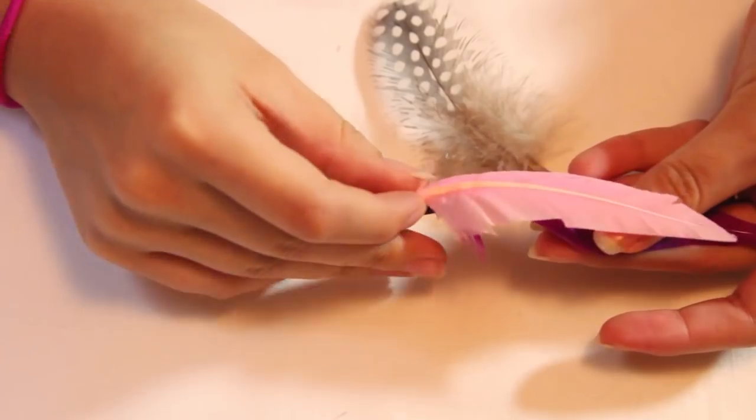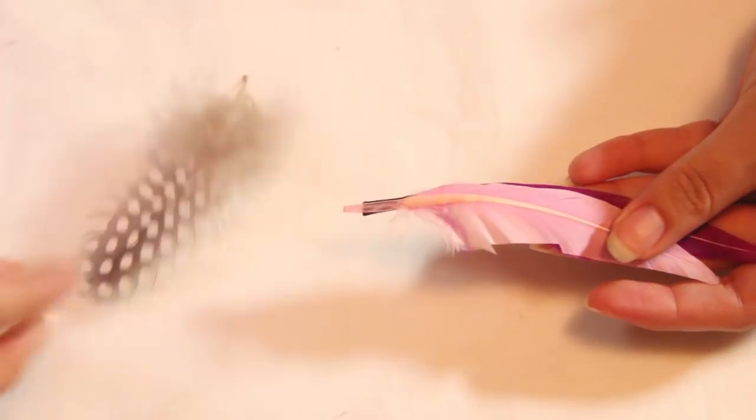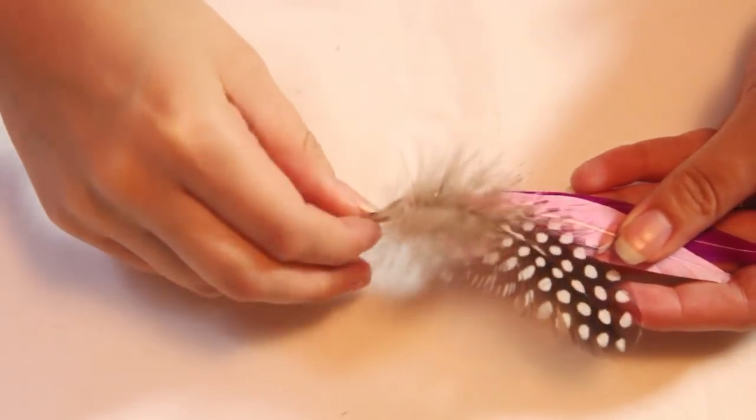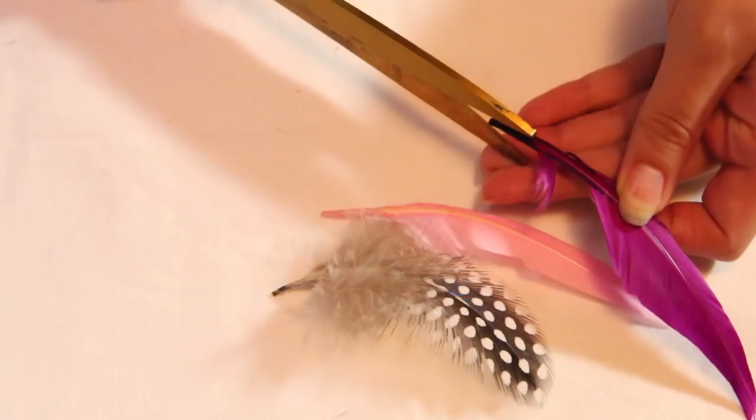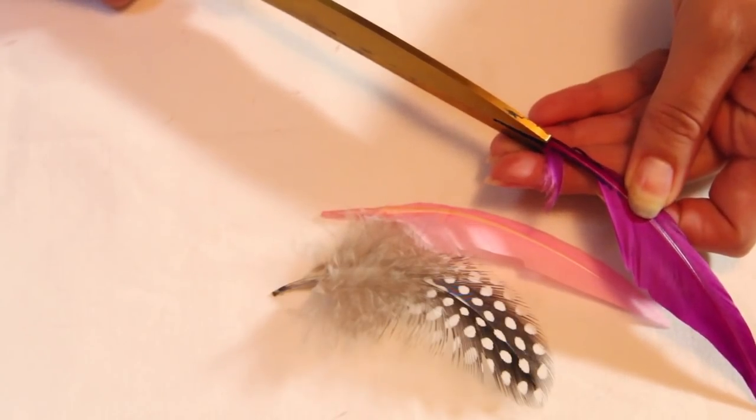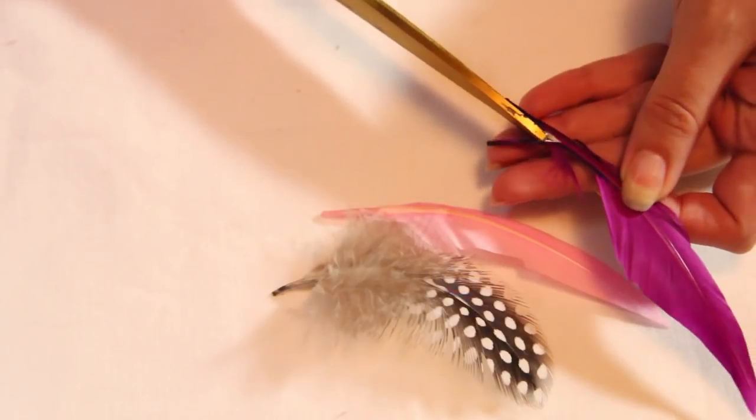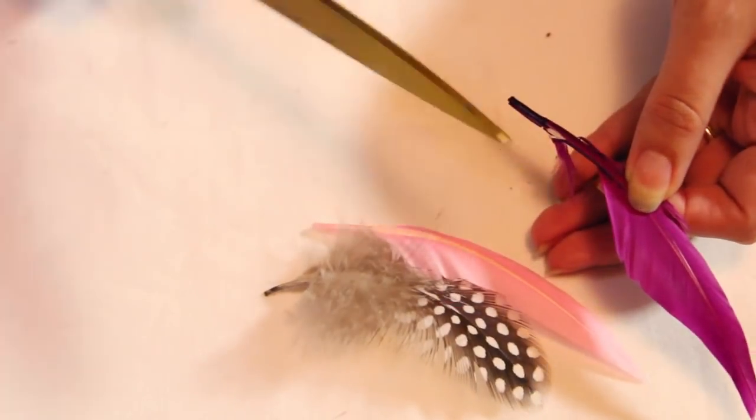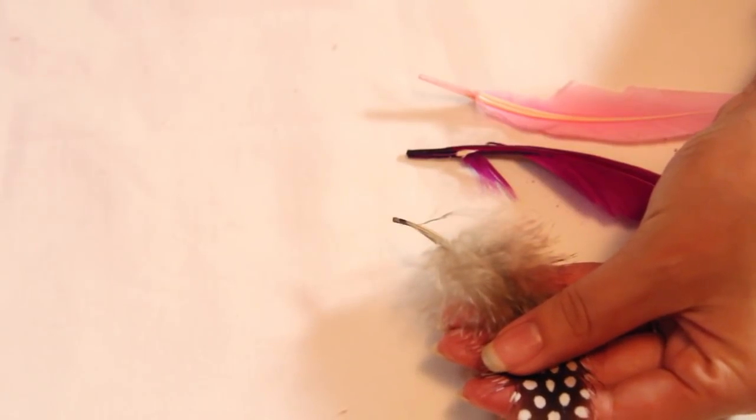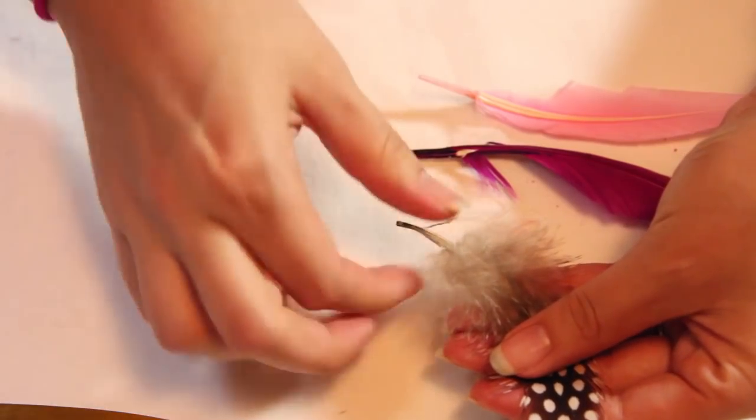The first thing you're gonna do is stack your feathers and decide how you want to stack them and how you want them to look. Once you're satisfied with how their placement will be, we're then going to use our scissors and cut the end of the feathers so that we can thin it down a bit. Also clear away any feathers that's going to be wrapped.